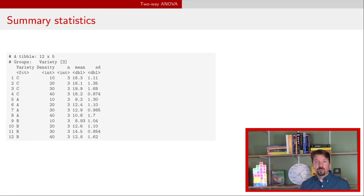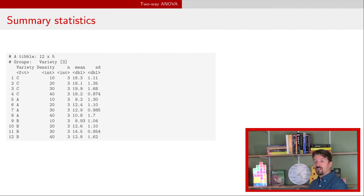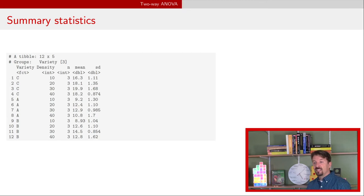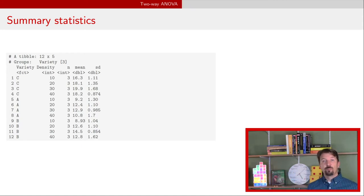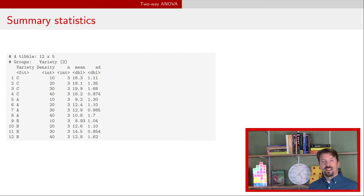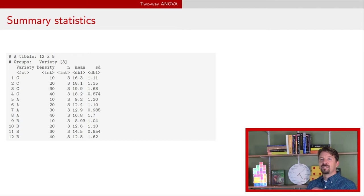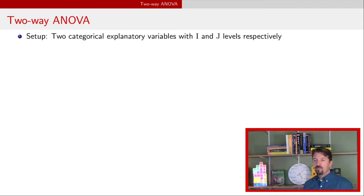We can first calculate summary statistics. Almost all calculations needed for two-way ANOVA tables are in this summary table. For each combination of variety and density, we have a number of observations — that whole column is three, confirming a balanced design. Every combination of variety and density is represented, confirming it is a complete design. For each combination we also provide the mean and standard deviation, though with only three observations the standard deviation will show a lot of variability.